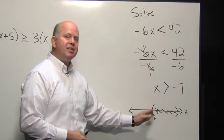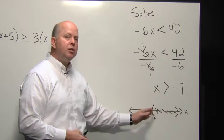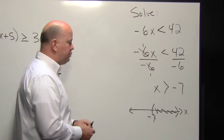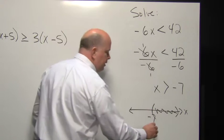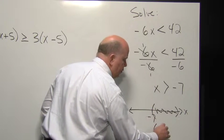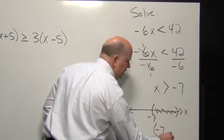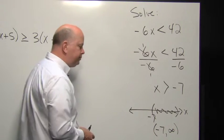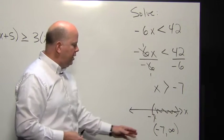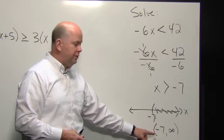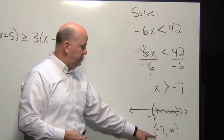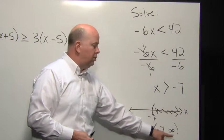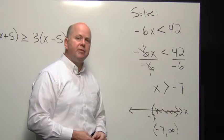The parenthesis represents that negative seven is not included in the solution set. This transfers beautifully to interval notation, where we would have negative seven as our leftmost value of the solution set, not included — therefore we use a parenthesis and not a square bracket — going all the way out to infinity.